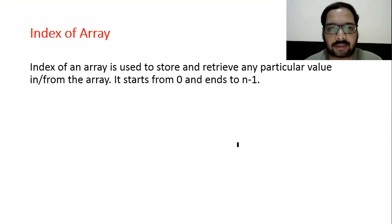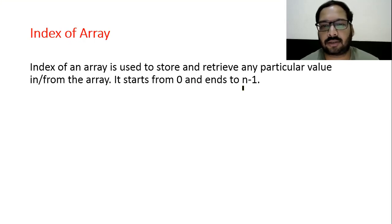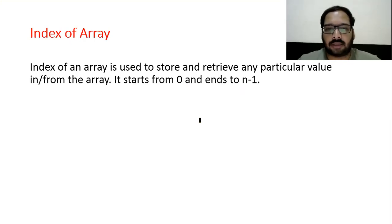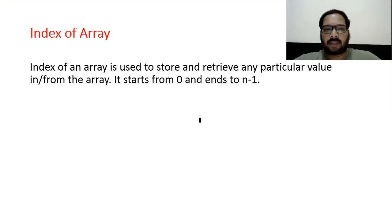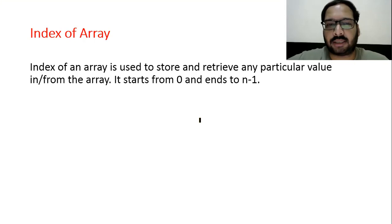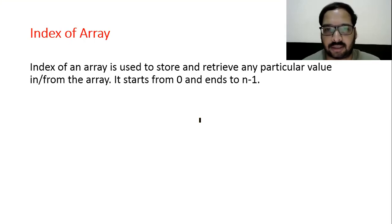Index of array is used to store and retrieve any particular value in or from the array. It starts from 0 and ends at n-1. When we create an array, the name remains the same but there are many locations — to identify different locations with the same name, we use the index.